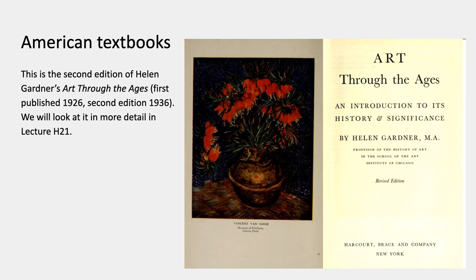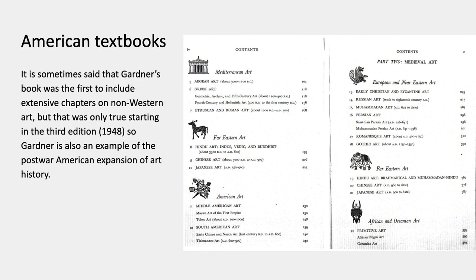This is the second edition of Helen Gardner's Art Through the Ages, first published in 1926. We're going to look at it in more detail because she was originally a teacher at the School of the Art Institute, and hers is one of the earliest of these American textbooks. It's sometimes said that her textbook was the first to include extensive chapters on non-Western art, but that's actually only true starting in the third edition. She supervised three editions, and it was really only the third edition when she started to expand beyond the master narrative and the examples used in the German pre-war textbooks.